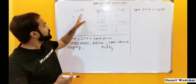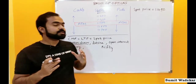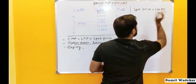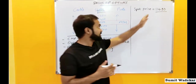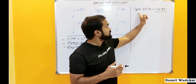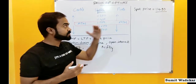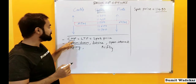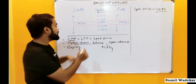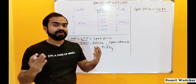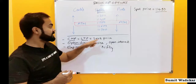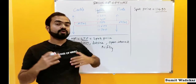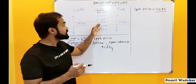We have taken the option chain of Nifty, which is an index of the top 50 companies listed in the share market. Suppose Nifty is trading at 11,490 — that is the spot price. We also call it CMP, which means current market price, or LTP, which is the last traded price. These three terms refer to the same thing.